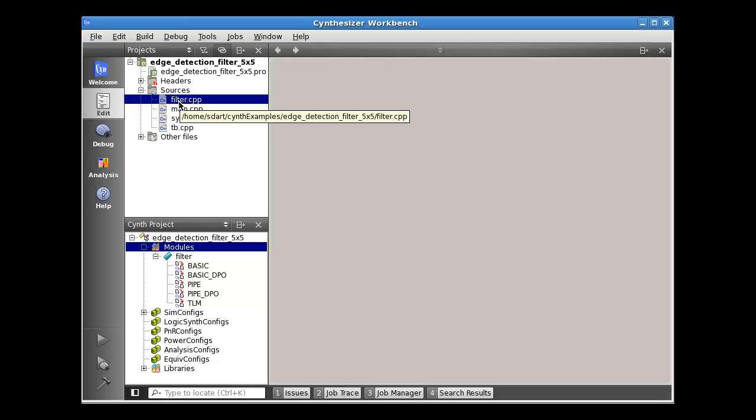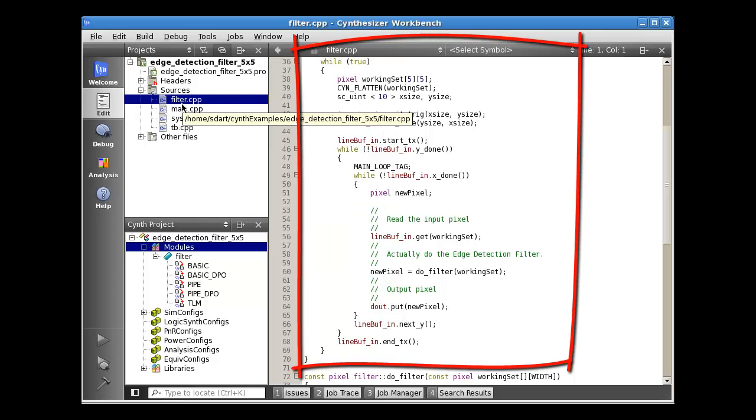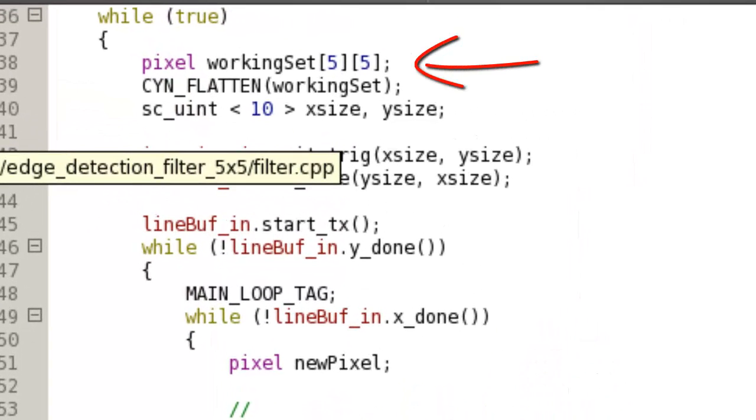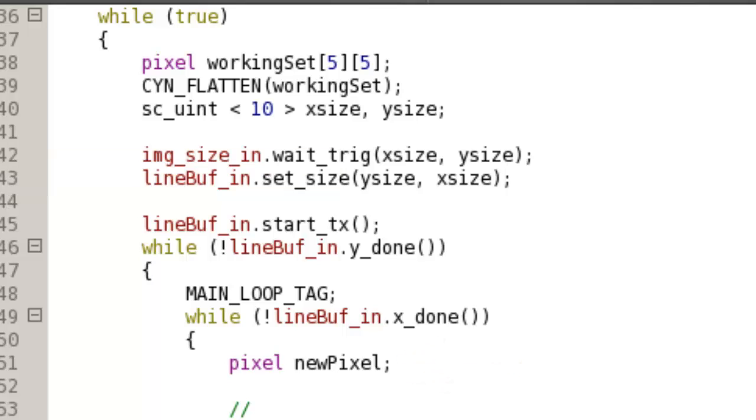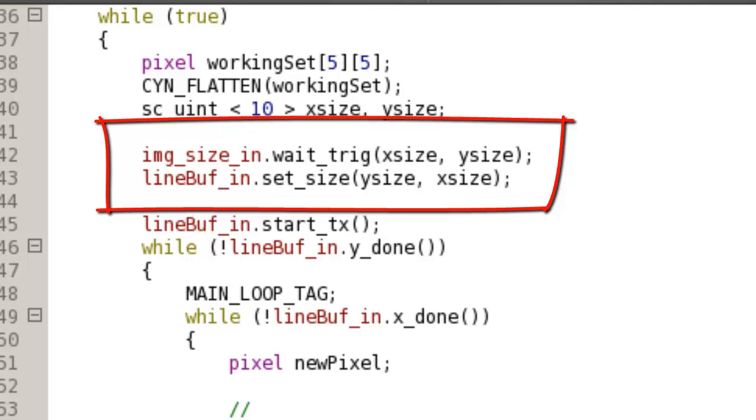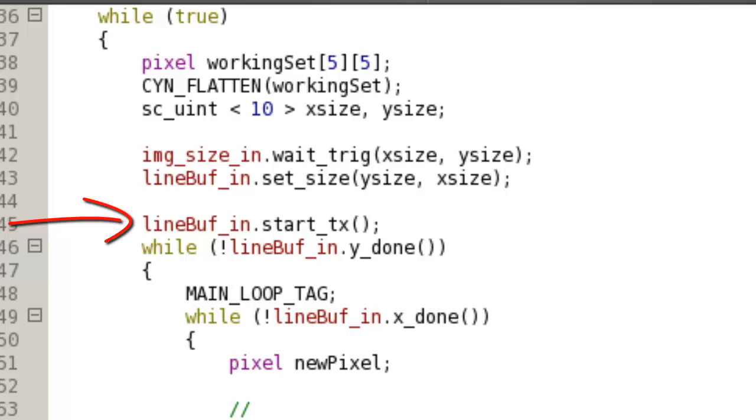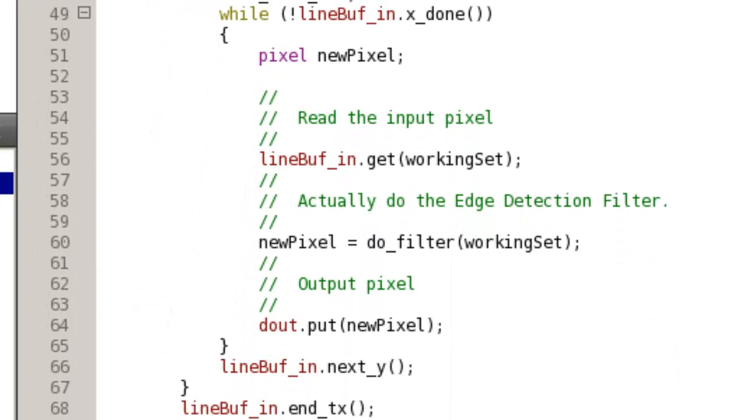We'll begin by looking at some source code in the filter.cpp file. Here we see the main loop of the filter module. The definition of the matrix that will hold the working set is clearly defined, and it's easy to identify the variable called NewPixel that will temporarily hold the newly calculated pixel values that will comprise the output image. After receiving some configuration data regarding the size of the image and passing that data onto the line buffer, we see a call to the API function startTx. This tells the line buffer that this filter module is ready to start a transaction. In other words, it's ready to begin processing a new image.